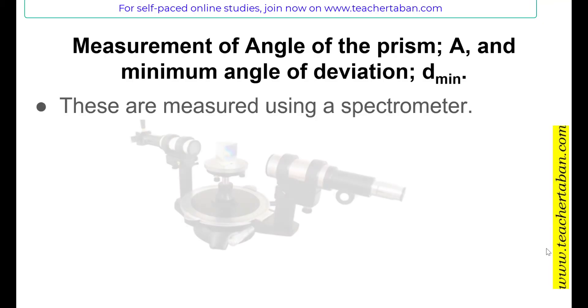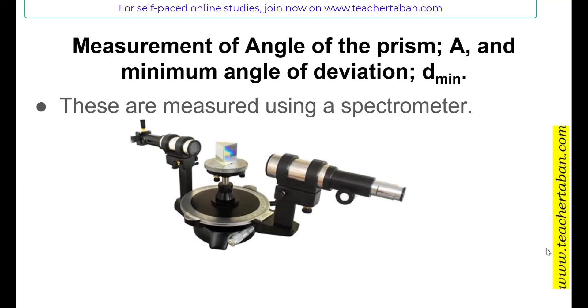The spectrometer looks like this. It has three major parts: basically, the collimator, the turntable, and then the telescope.